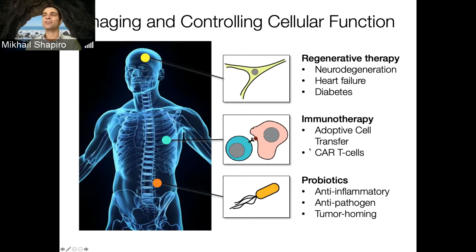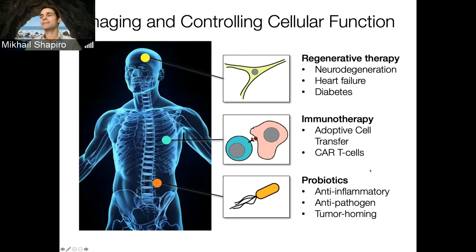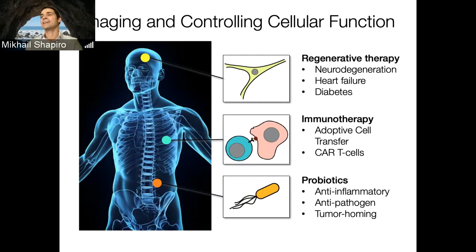At the same time, we and others — including many of you at Georgia Tech — are interested in developing cells as diagnostic and therapeutic agents. There have been spectacular successes, for example with immunotherapy where T cells can be engineered to better fight cancer and injected into patients, gaining FDA approval. Another example is probiotics — now being engineered to go through the gut, detect inflammation, and release anti-inflammatory compounds. With these sophisticated cell-based therapies, it's a bit of a black box right now.